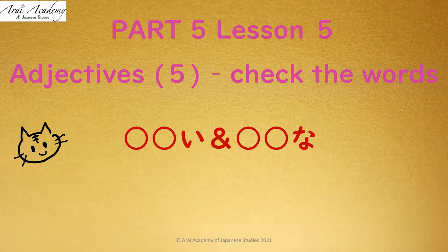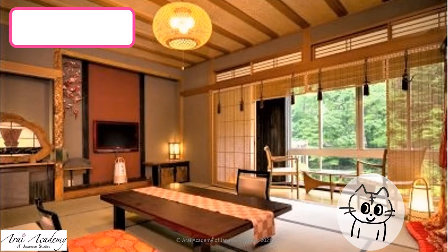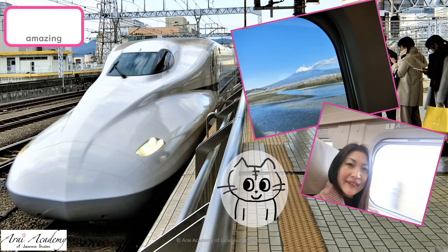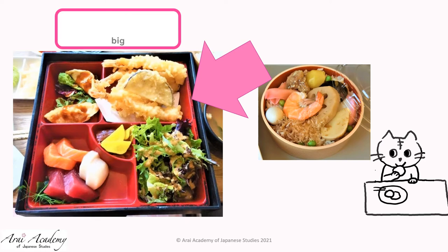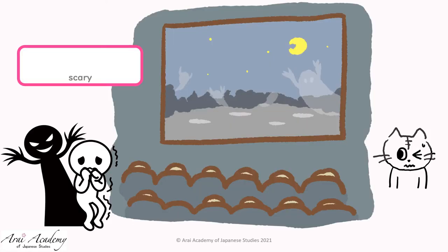Let's revise some words from Part 5. Tell me 'famous' in Japanese — yes, yumei na. Next, 'nice or gorgeous' — yes, suteki na. 'Beautiful or clean' — yes, kirei na. 'Amazing' — sugoi. 'Big' — ookii. 'Interesting or funny' — yes, omoshiroi. The last one: 'scary' — kowai. Very good.